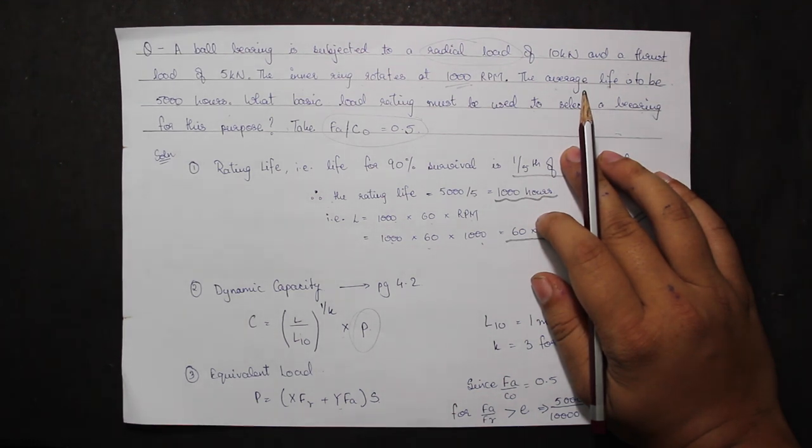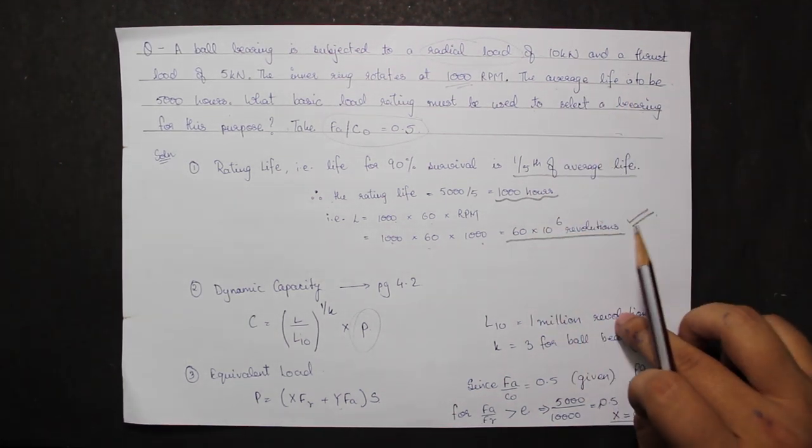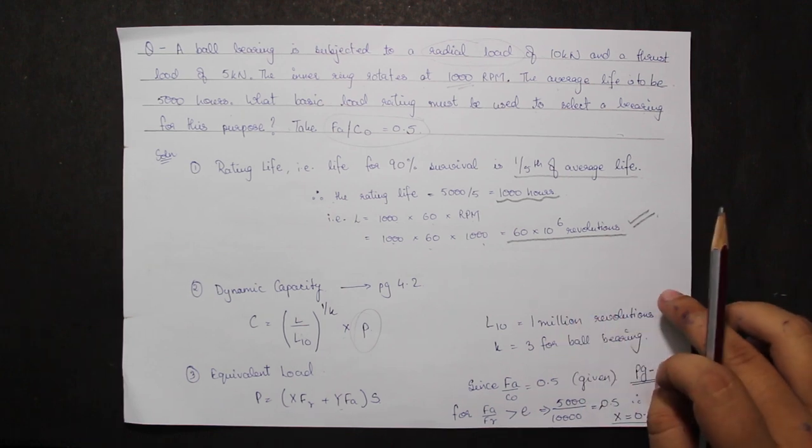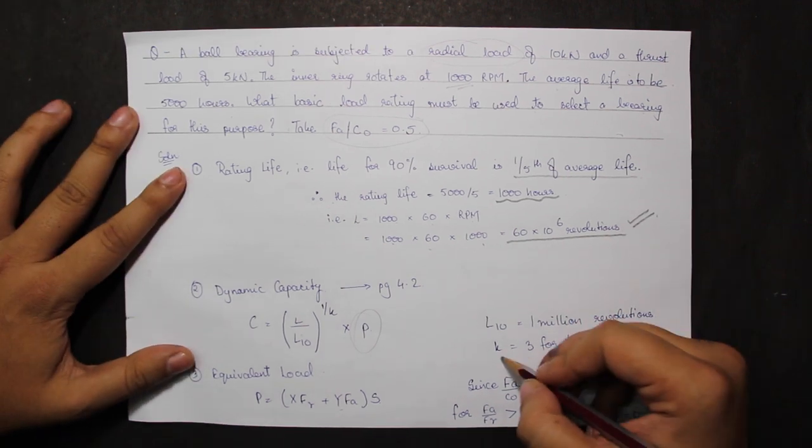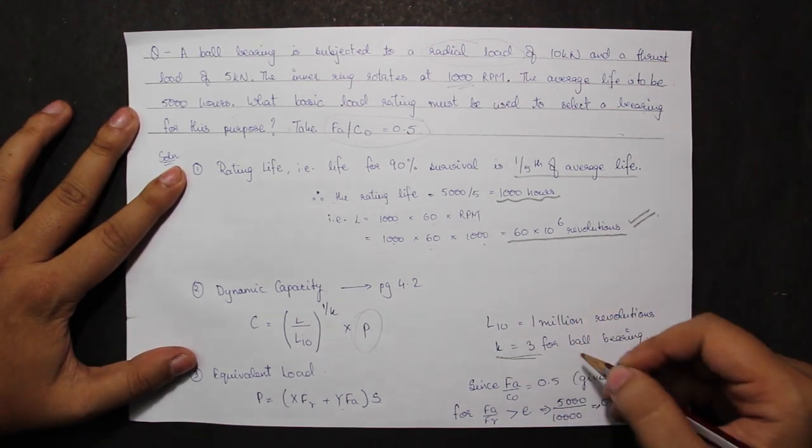Here L10 is 1MR or 1 million revolutions. K is equal to 3 for ball bearings and K is taken as 10 by 3 for roller bearings.